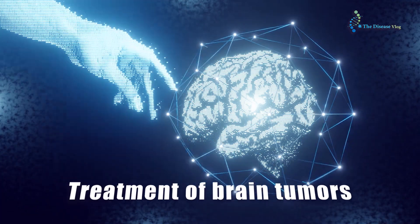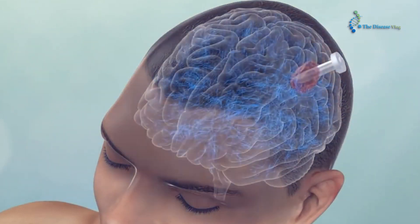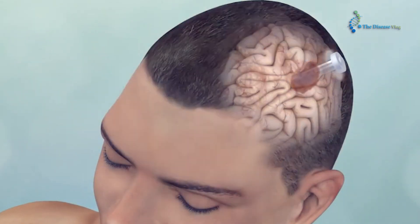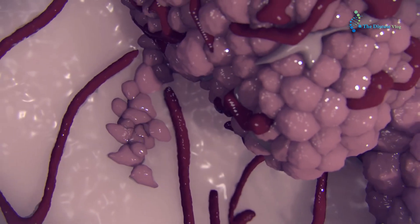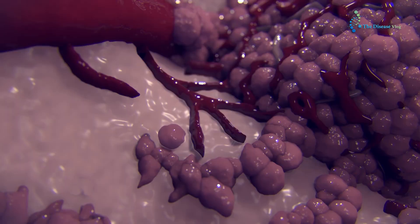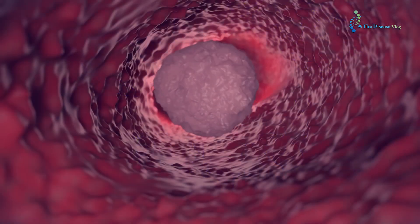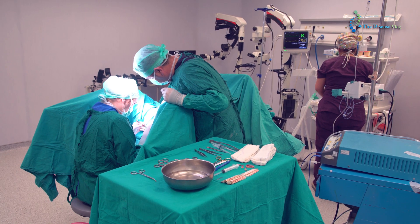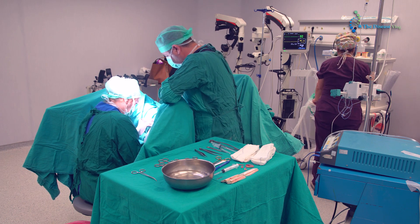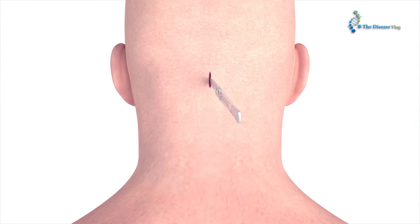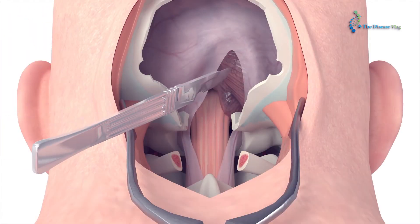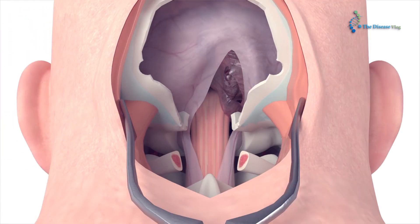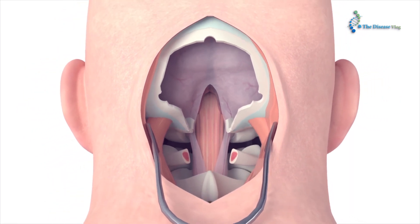Treatment of brain tumors: Benign tumors do not spread and are typically harmless, so they can be easily excised completely through surgical treatment. Conversely, malignant or cancerous tumors grow rapidly and spread from one brain part to another; therefore, they cannot be treated as easily, as they may regrow even after surgery. Craniotomy is a type of surgical treatment which involves making an incision in the brain to surgically remove tumors. Neurosurgeons perform craniotomy while keeping patients awake to ensure the brain is protected from damage during surgery.